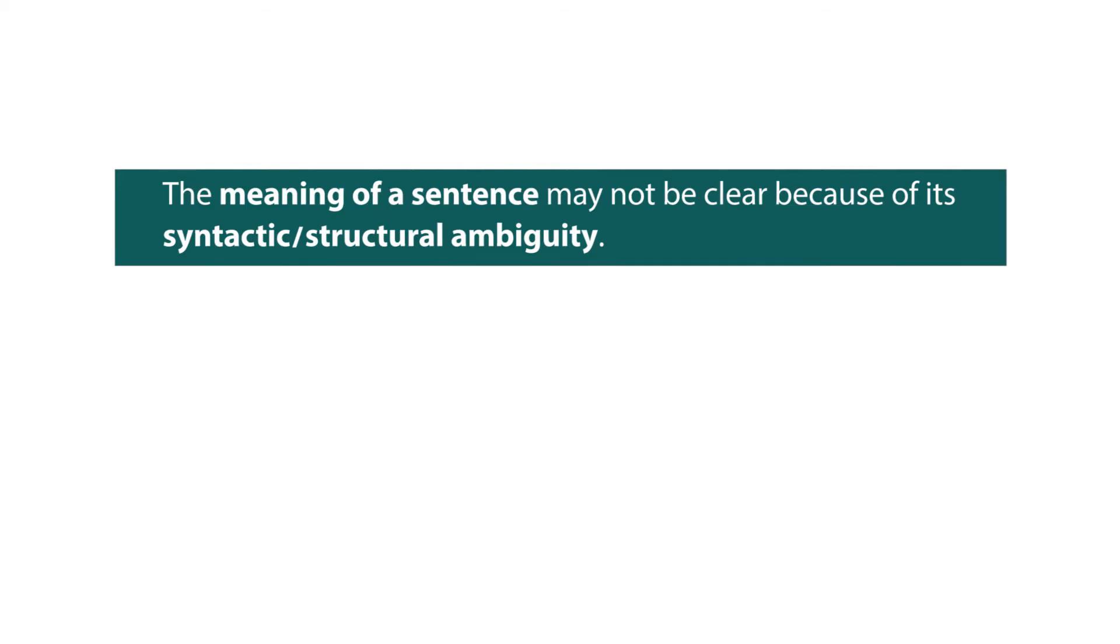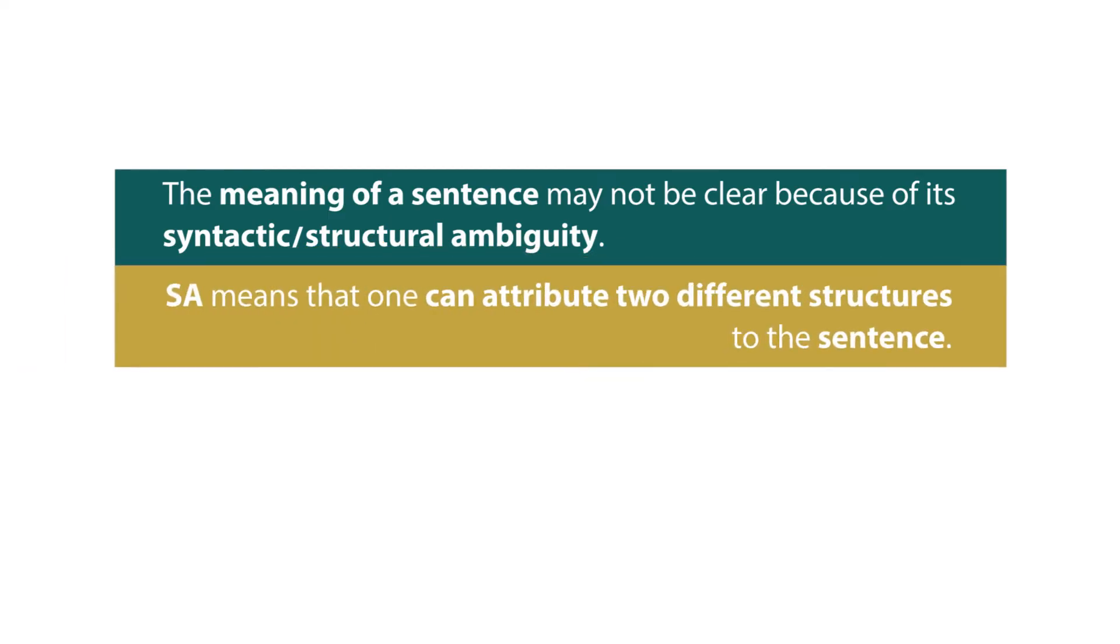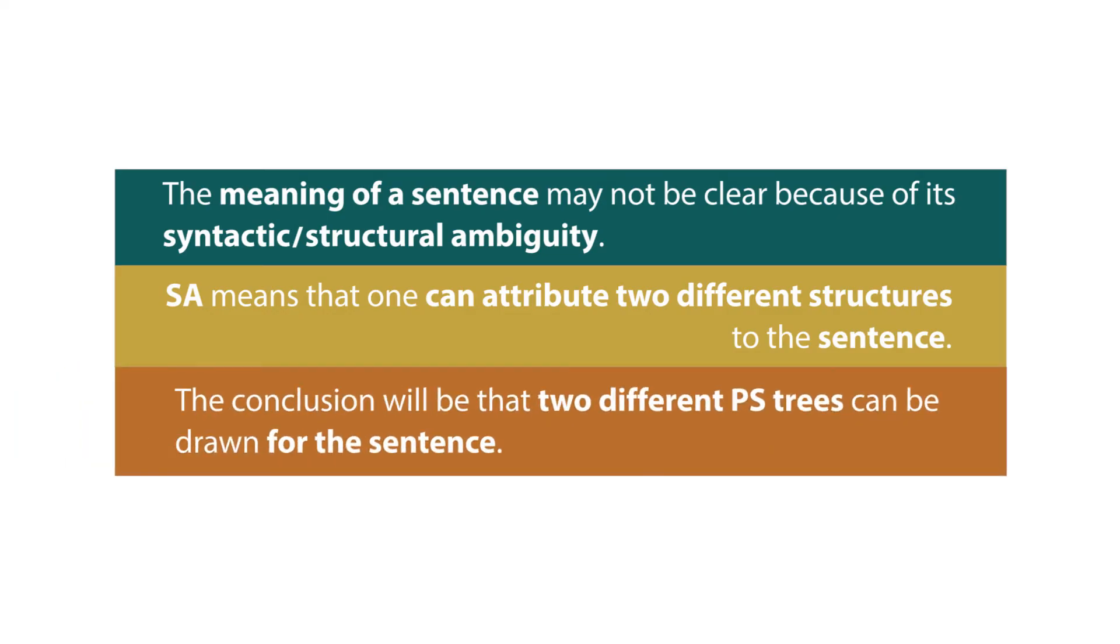Now, this was an introduction to structural ambiguity or syntactic ambiguity. Structural ambiguity means that one can attribute two different structures to the same sentence. Depending on how you interpret the meaning, for every meaning there will be a different tree diagram.